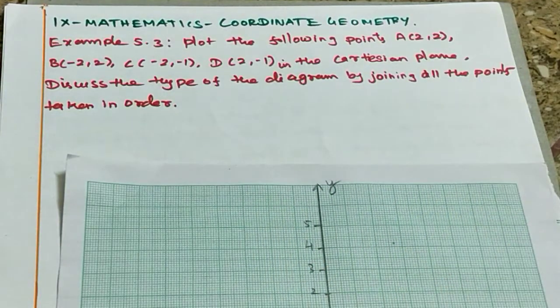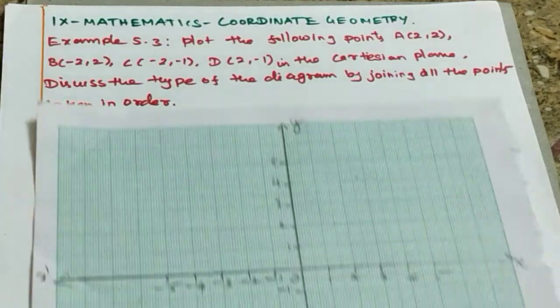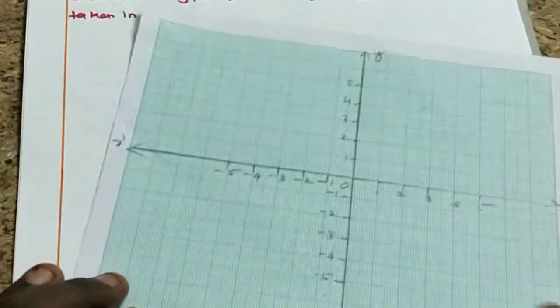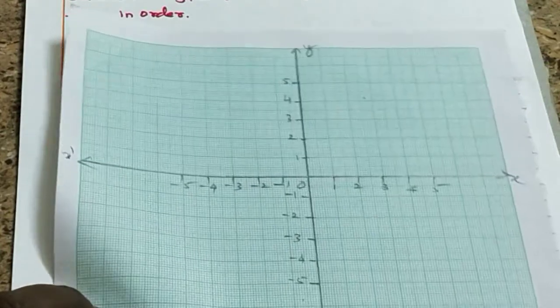Join the 4 points to see what diagram forms. This is the graph sheet with X and X dash and Y and Y dash axes.